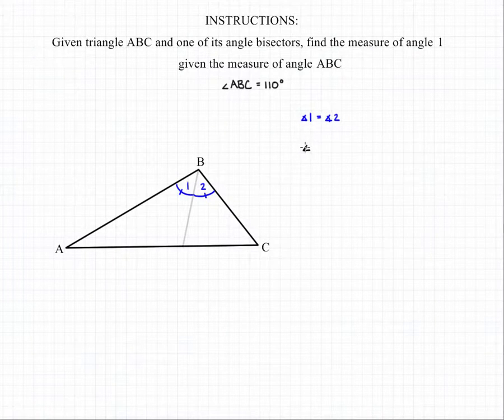Now we know that angle 1 and angle 2 make up angle ABC, so we can say angle ABC is equal to the measure of angle 1 plus the measure of angle 2.